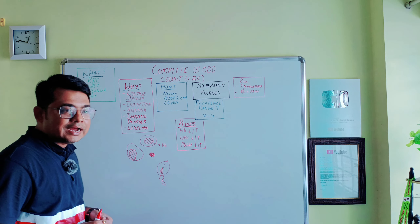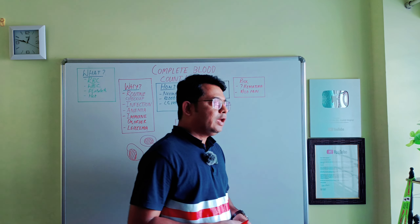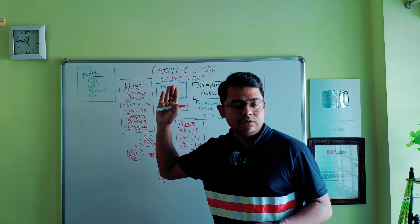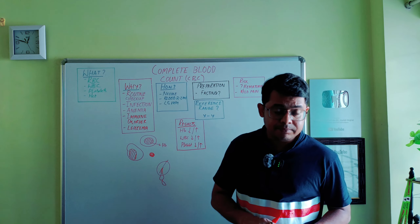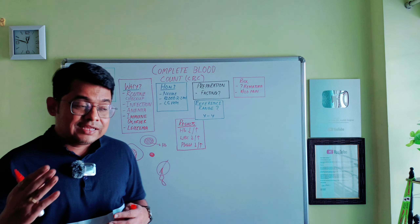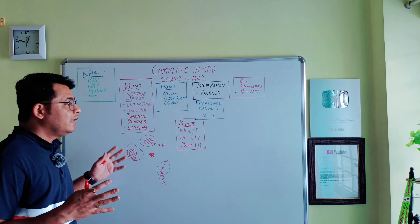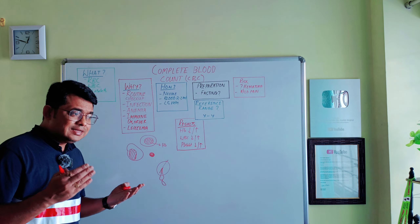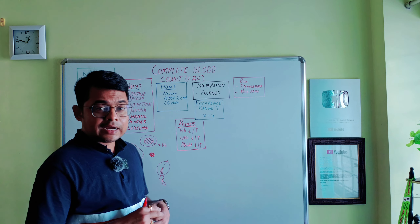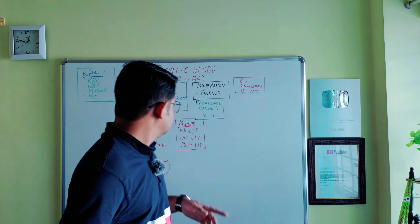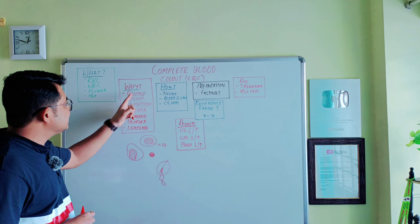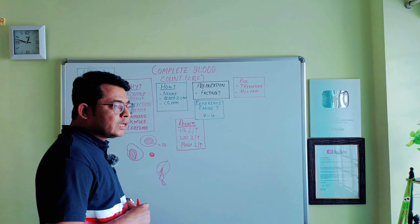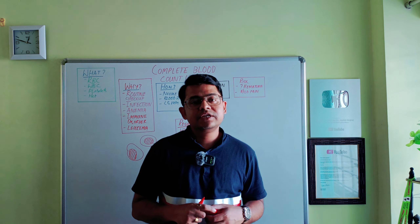So complete blood count gives us an idea about RBC, WBC, and platelets. There is also a term called hematocrit, which is the ratio of plasma to cellular components of blood, and that is also important in various disease processes.